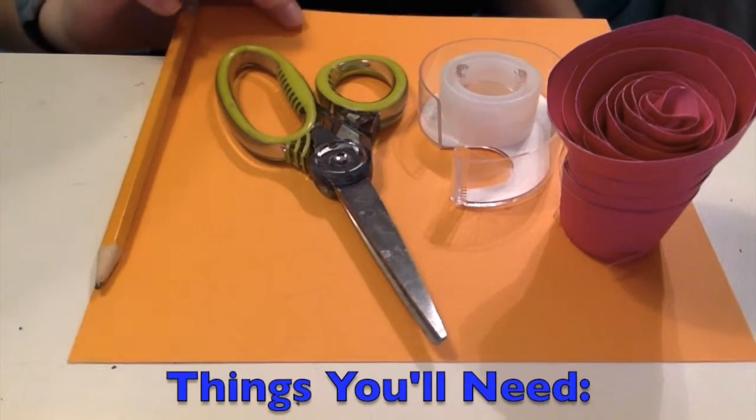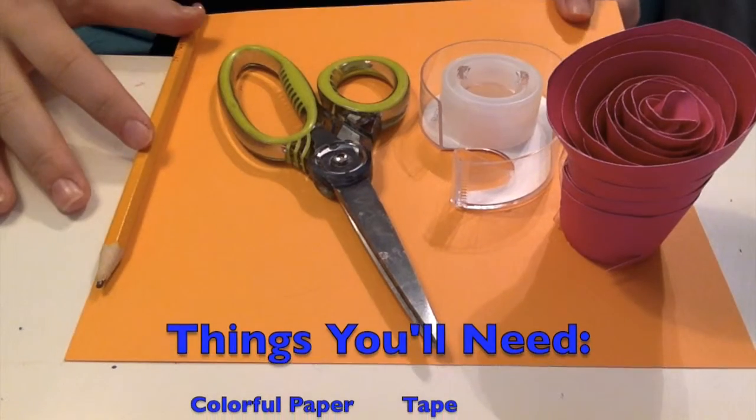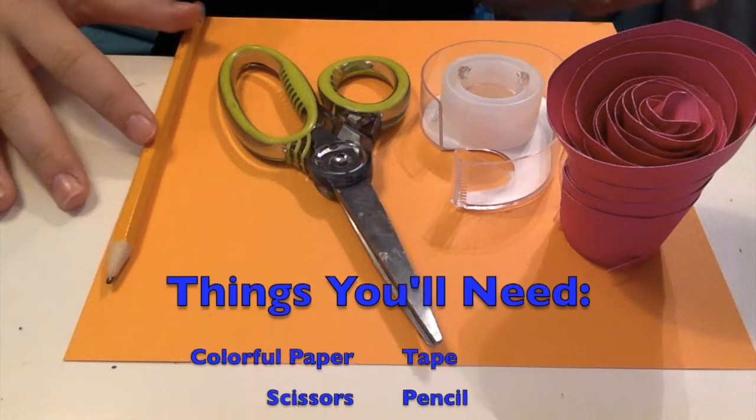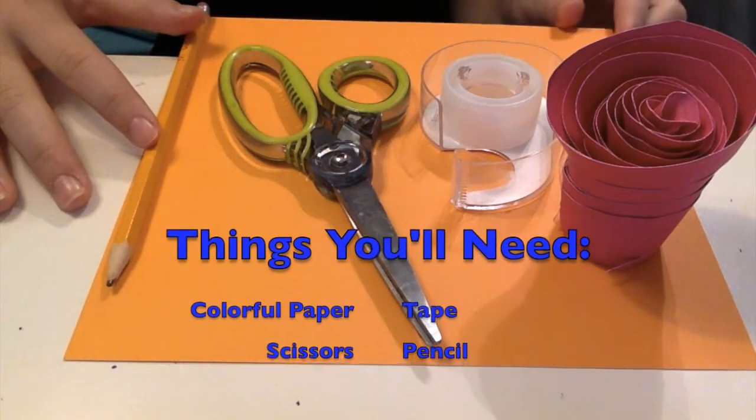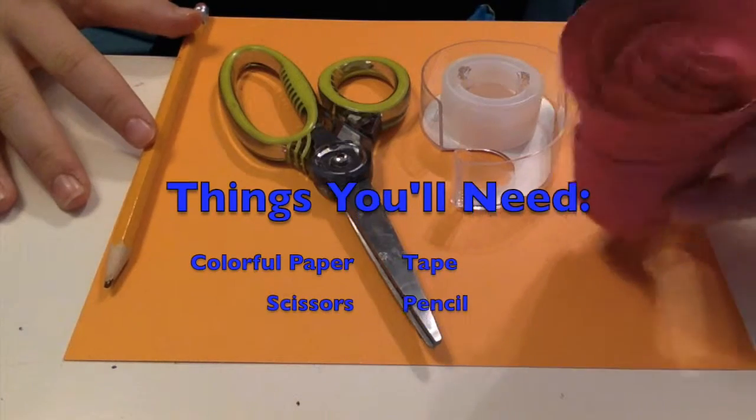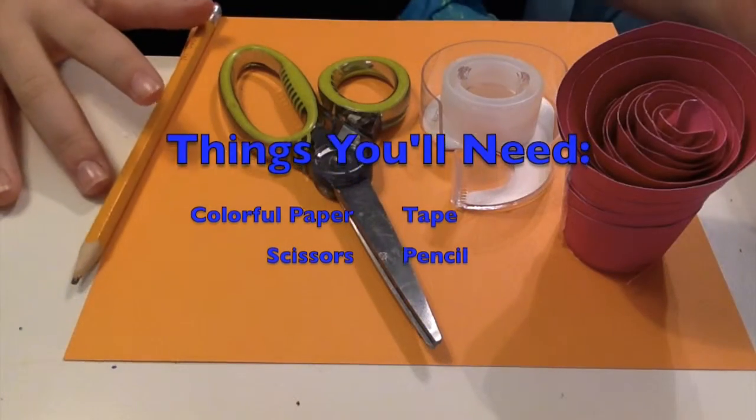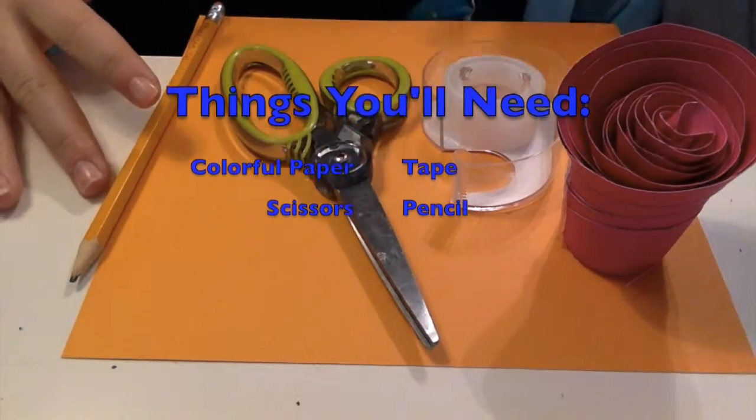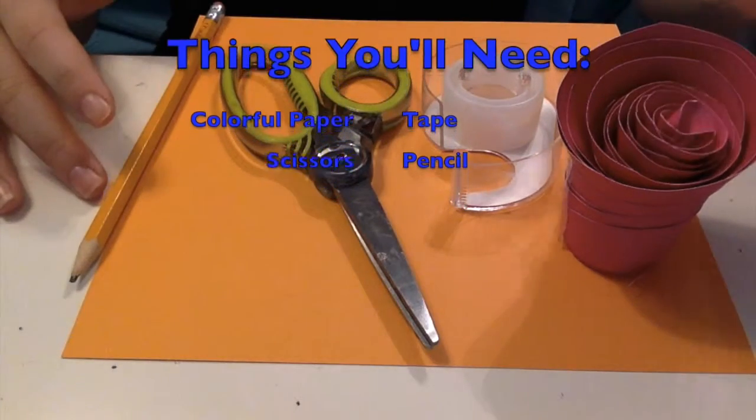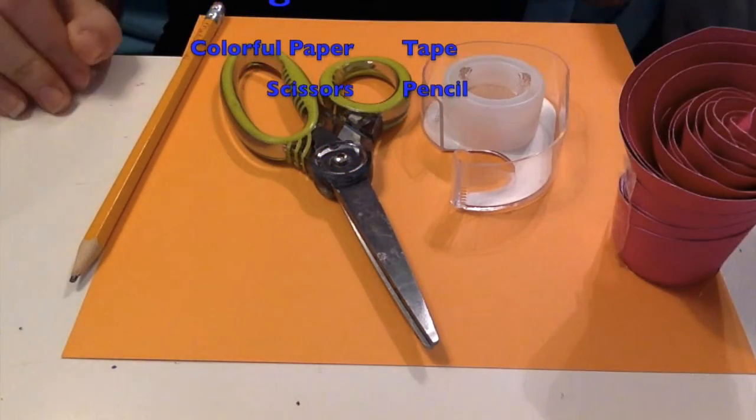So you'll need paper. It's not a regular size of paper, it's like a square. But if you wanted, you could use a regular piece of paper and the flower would be bigger. Or you could use a really small piece of paper, like smaller than this, and it would be like a little bud. So that would still be really cute.